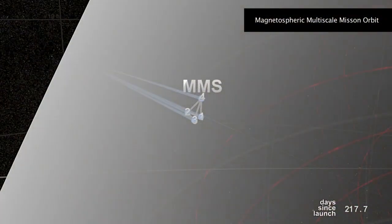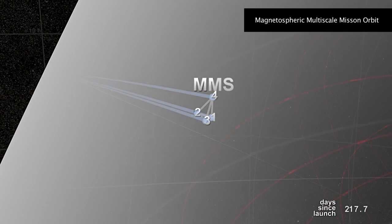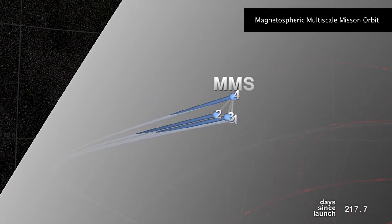Here at the magnetopause, scientists expect to catch magnetic reconnection in action, so the apogee of the orbit is designed so that the tetrahedron cuts across the boundary twice per orbit while in perfect formation.